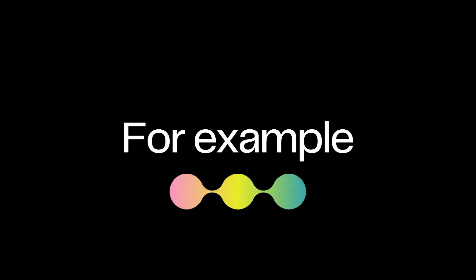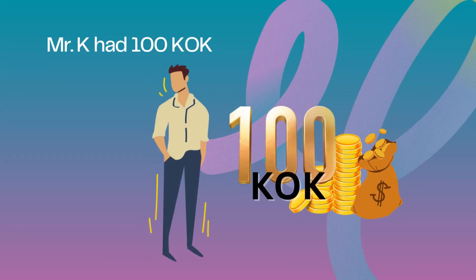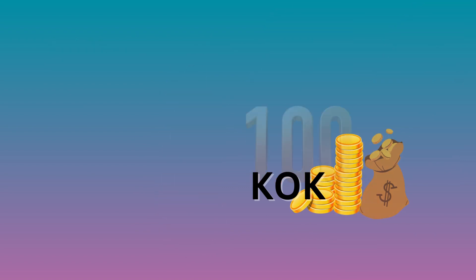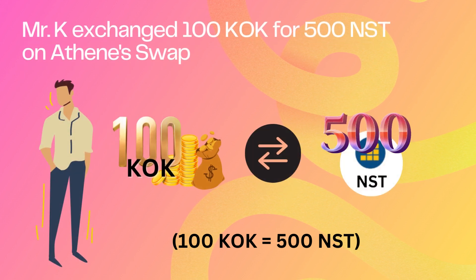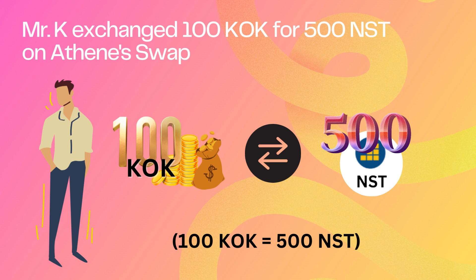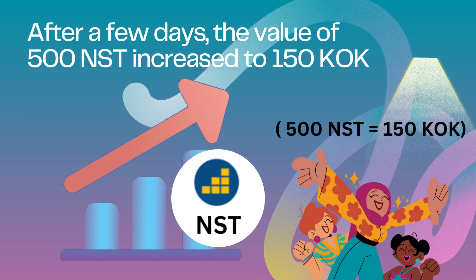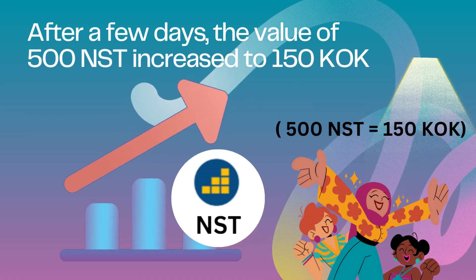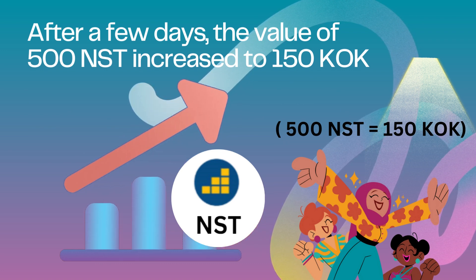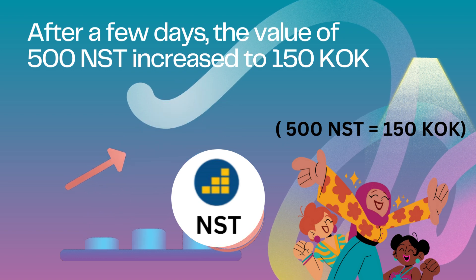Here's one example. Initially, Mr. K had 100 KOK. He exchanged 100 KOK for 500 NST on AtheneSwap — 100 KOK is equal to 500 NST. After a few days, the value of 500 NST increased to 150 KOK, meaning 500 NST is equal to 150 KOK.